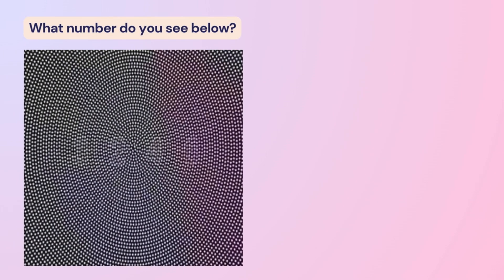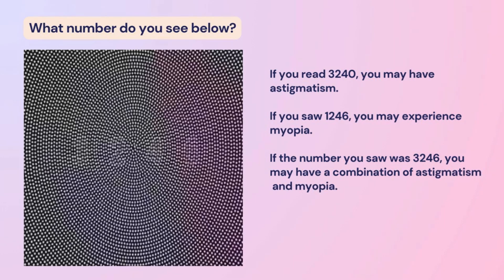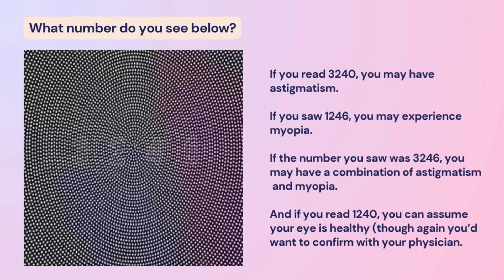What number do you see below? If you read 3240, you may have astigmatism. If you saw 1246, you may experience myopia. If the number you saw was 3246, you may have a combination of astigmatism and myopia. And if you read 1240, you can assume your eye is healthy — though you'd want to confirm with your physician.